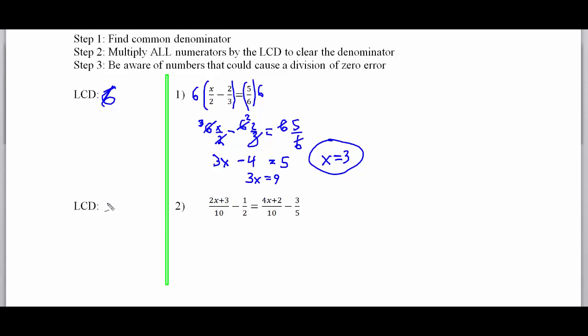For problem number 2, we'll have some common denominators of 2, 10, and 5. And there's no danger numbers or excluded values because there's no x's in the denominator. So we're going to multiply everything by 10.